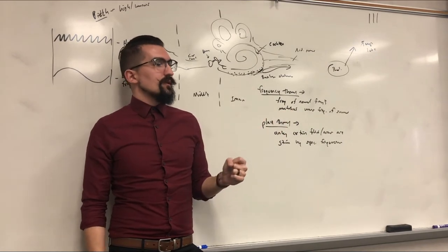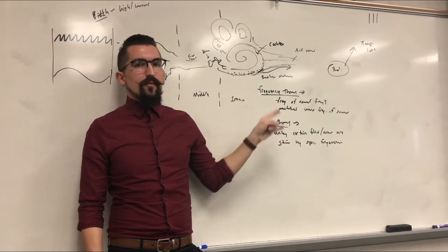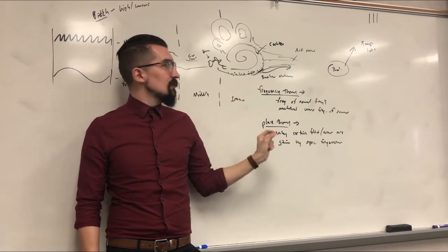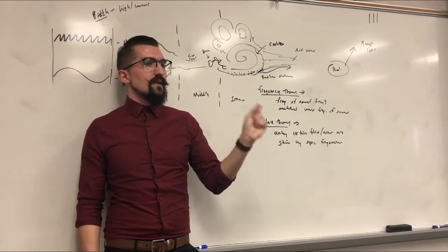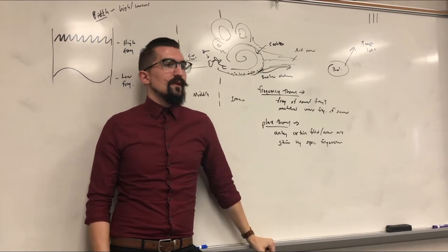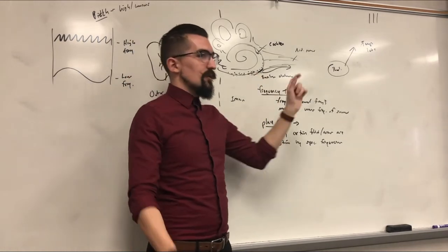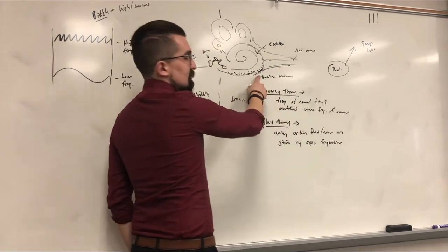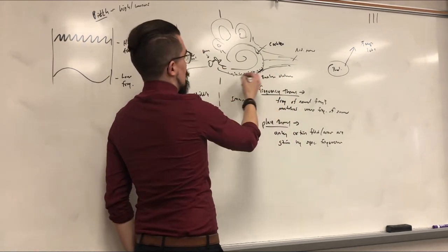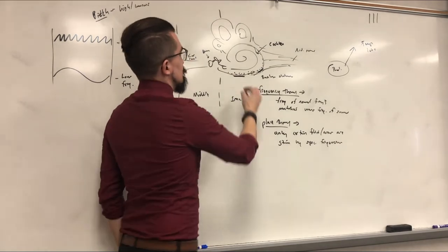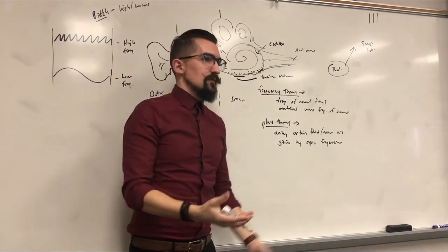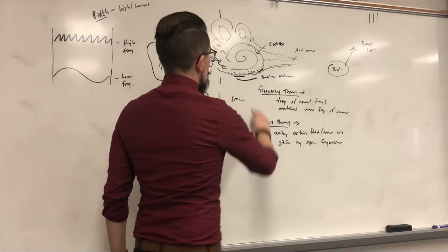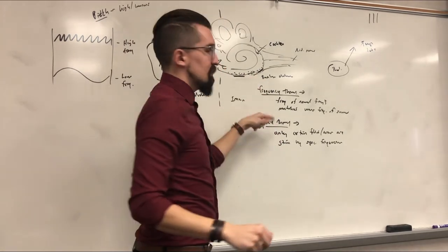The second theory is place theory: certain areas of the cochlea have hairs that are only activated by a specific frequency. If a high-frequency sound comes in, hairs in one location are the right length or thickness to catch it and activate, while hairs elsewhere are not. Your brain knows the pitch based on which location's hairs are stimulated — just like knowing a color from which cone is activated.